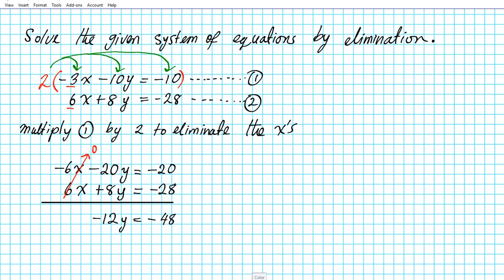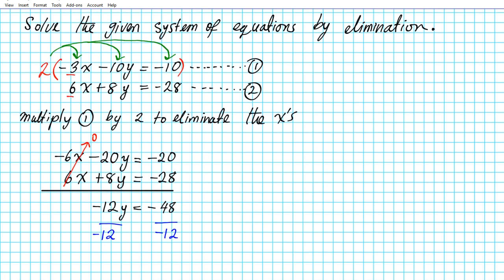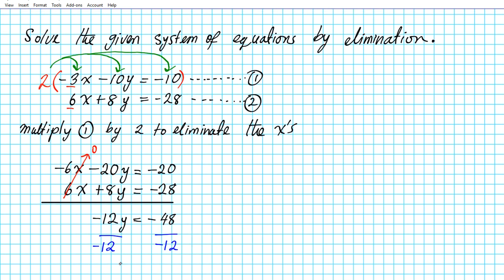Now you see the beauty of elimination — we eliminated one variable, leaving one equation and one unknown, which can be solved using basic algebra. We divide both sides by negative 12, the coefficient of y, to isolate the y variable. The 12s divide out to 1, and negative 48 divided by negative 12 is positive 4, so y equals 4. That's our first answer. Since this system has two unknowns, we now need to find the second one.